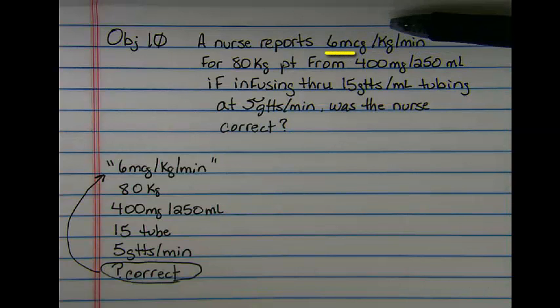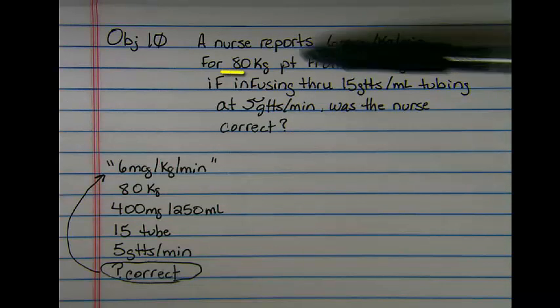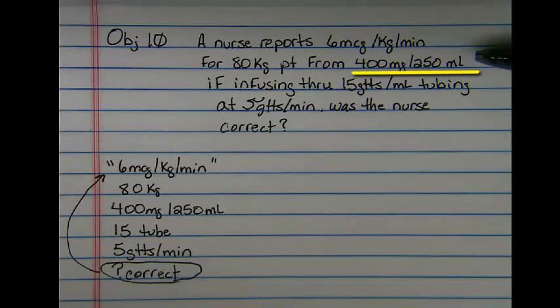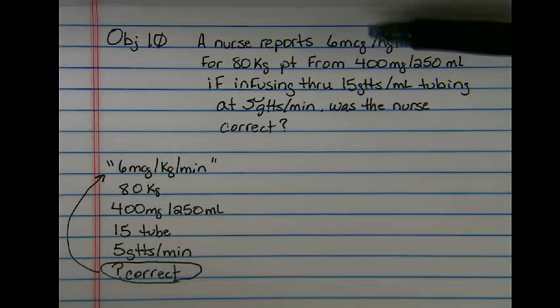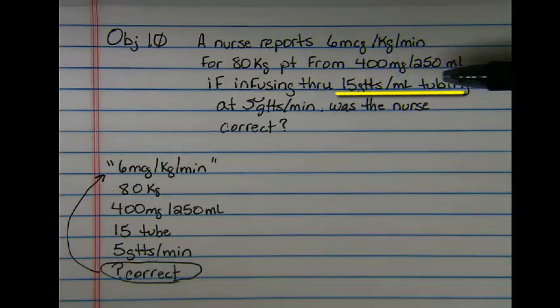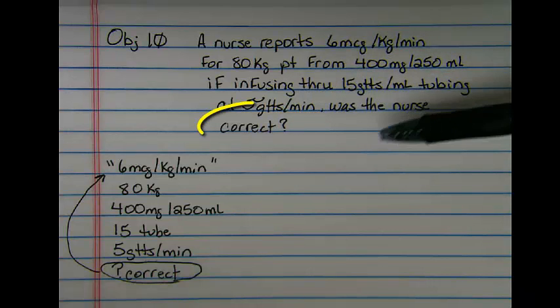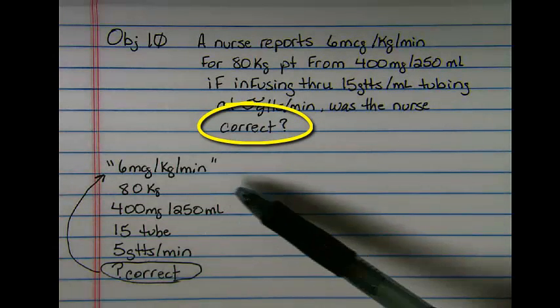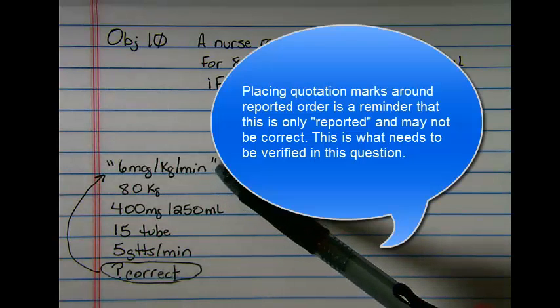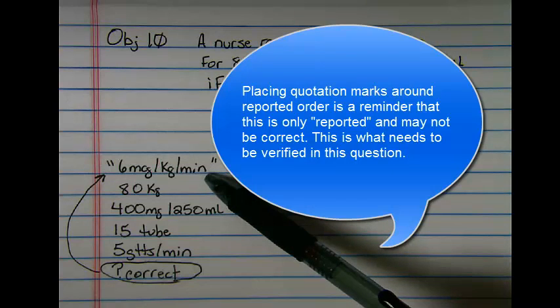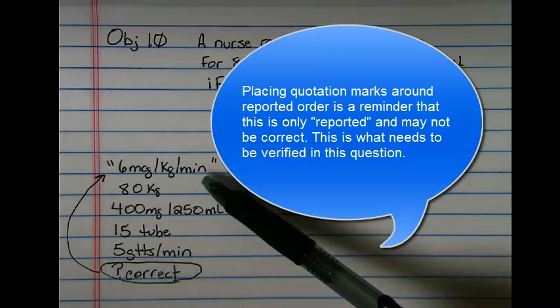The question reads: a nurse reports 6 micrograms per kilogram per minute for an 80 kilogram patient from 400 milligrams in 250 milliliters. If this is infusing through 15 drop per milliliter tubing at 5 drops per minute, was the nurse correct? So really, when we set the toolbox up, I've put quotations around what the nurse reported to indicate that we don't know if this is correct or not. This is what the nurse is telling us the patient's getting, but we don't really know.